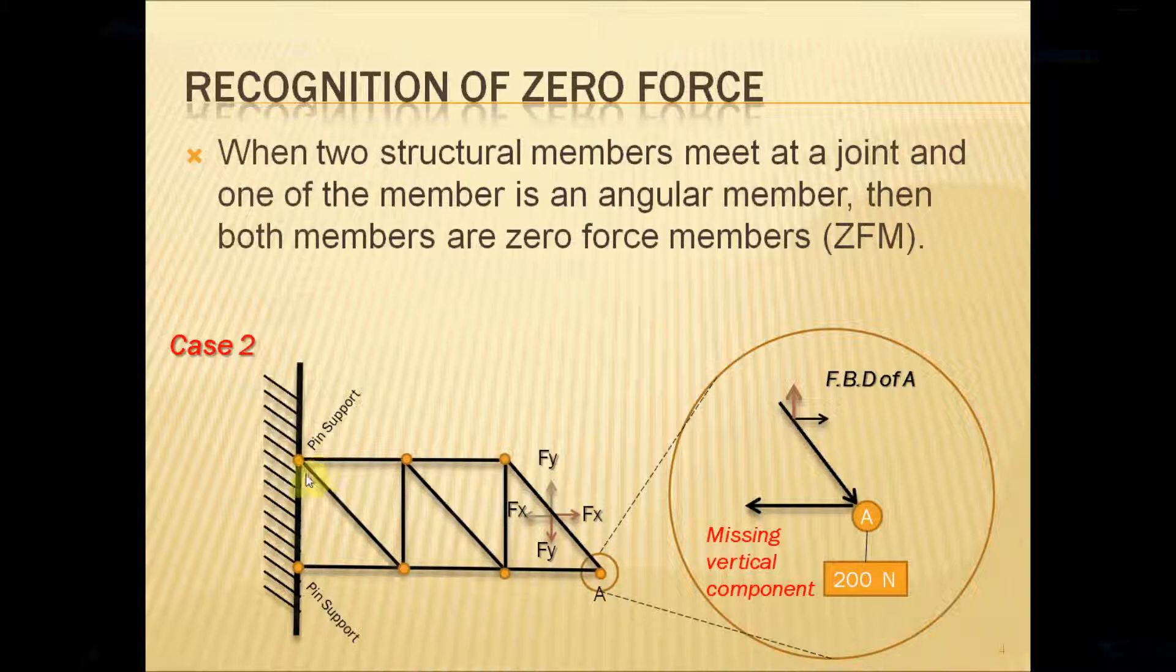We have one joint. We would have one, two, three, about four calculations in there, about four in there, and it just keeps on going. So if you could minimize the amount of members by just visually recognizing the zero force member, you're minimizing the amount of calculations to be done.